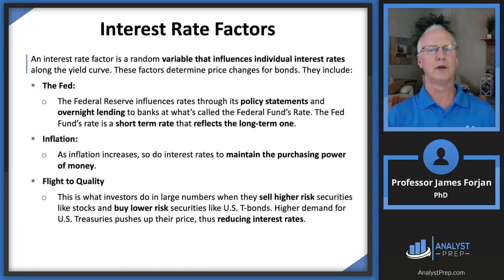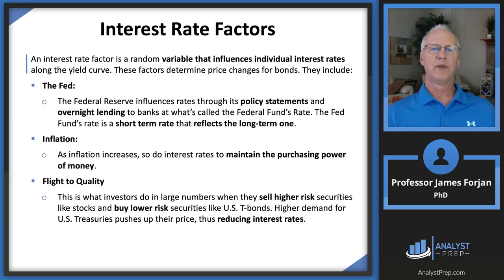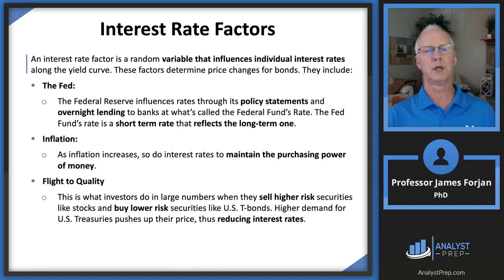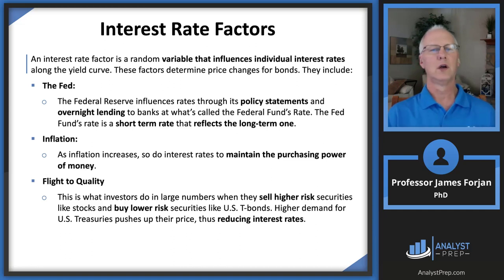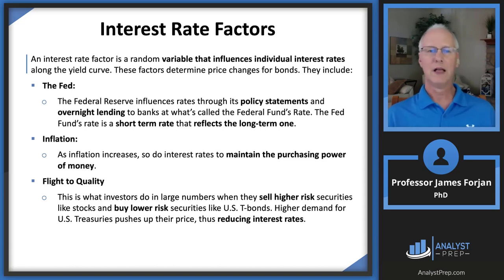Let's start with that very first learning objective. Going back to our previous chapter where we talked about the yield curve — the yield curve is a picture of the relationship between time to maturity on the horizontal axis and yield to maturity on the vertical axis. That relationship can be either upward sloping or downward sloping.